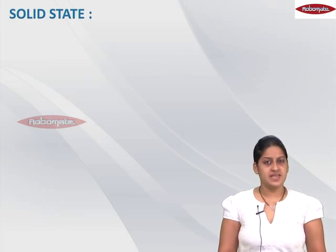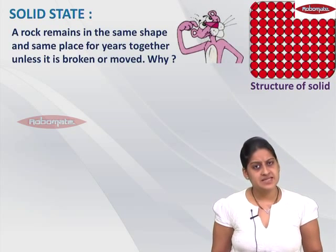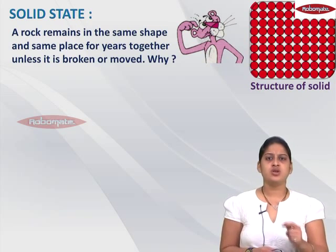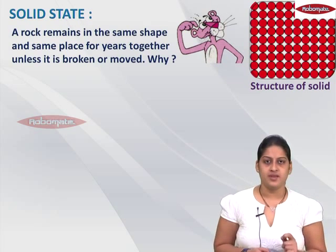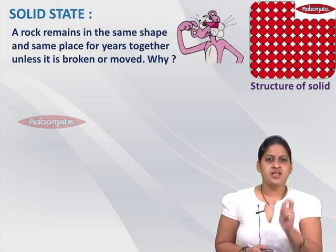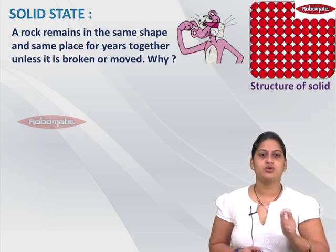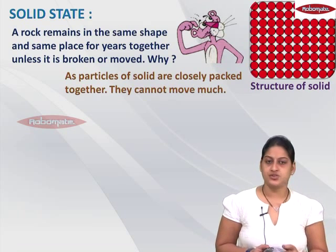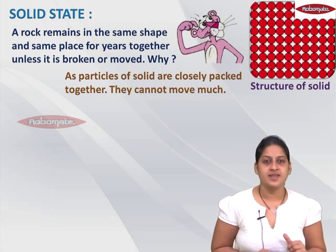Now if we talk about the solid state, we have seen that a rock remains in the same shape and the same place for years together, unless it is broken or moved. Why does the rock not change its shape? Rock is a solid substance, and in a solid the particles are very closely packed to each other — there is no space between them and they can't move. Because of the particles being very close to each other, the solid remains in the same shape and same place for years together. Since the particles of a solid are closely packed, they cannot move much, and this is why solids get their shape.